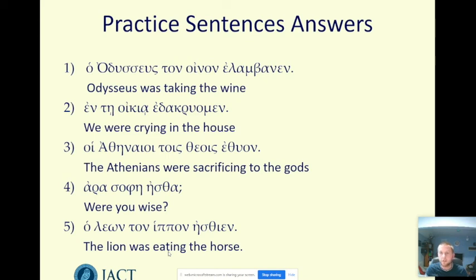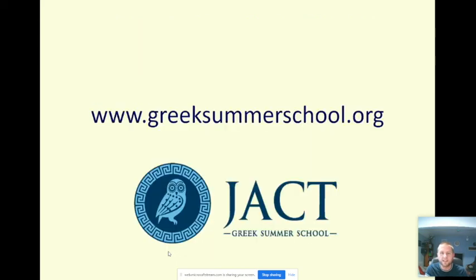And those are two tenses covered: the future with the sigma and present tense endings, and the imperfect with its own endings and the augment at the front. Thank you very much for watching and listening to this; hopefully it's really helped clarify those two tenses for you. For more resources on learning ancient Greek, do please visit our website at www.greeksummerschool.org. Thank you.